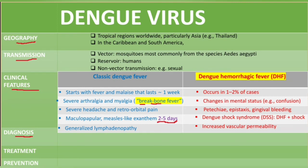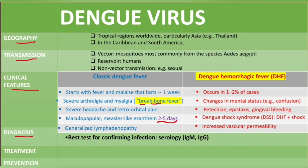Regarding diagnosis, laboratory findings include leukopenia and increased liver function tests. The best method is serology, where we detect IgM and IgG. Other alternatives include PCR and molecular methods such as ELISA — enzyme-linked immunosorbent assay — which is used to detect the viral antigen.